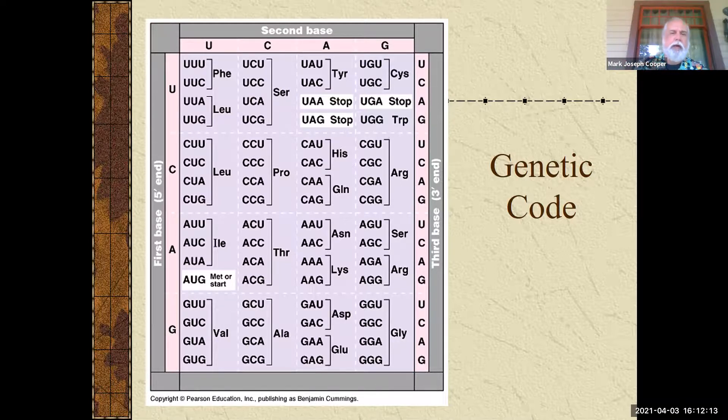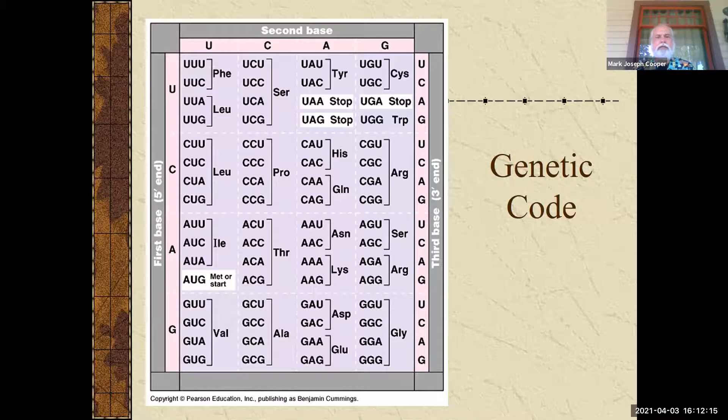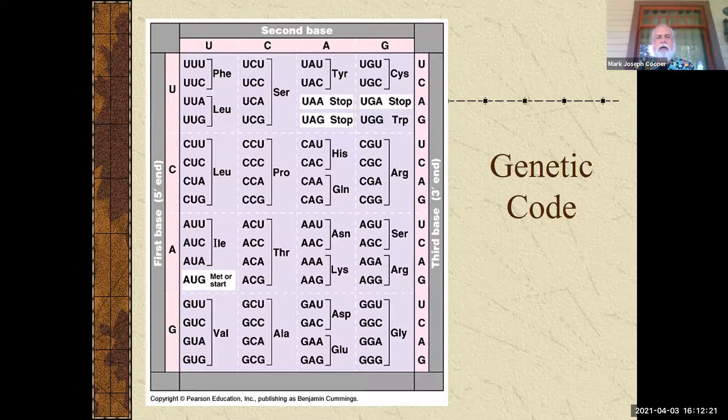What I do want you to memorize is the white boxes. AUG is the start codon that needs to be there to start, and that actually codes for methionine. Then you can also see the three stop codons: UAA, UAG, UGA. That basically will terminate protein synthesis. Okay, so I need you to know those four in white. Memorize those.